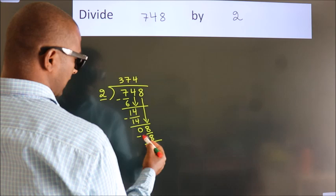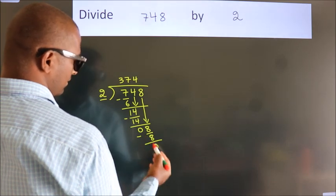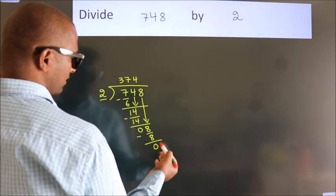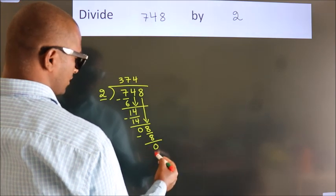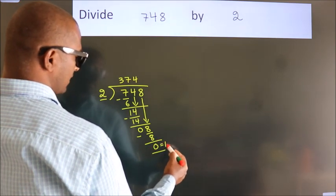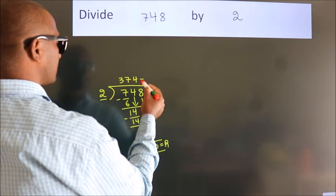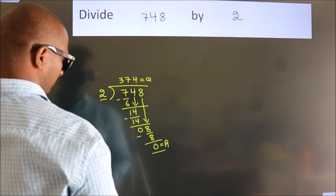Now we subtract, we get 0. After this, no more numbers to bring down. So we stop here. This is our remainder. This is our quotient: 3, 7, 4.